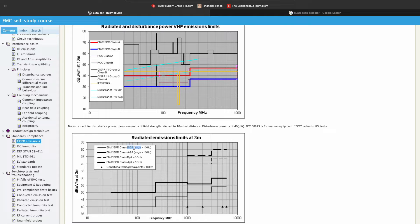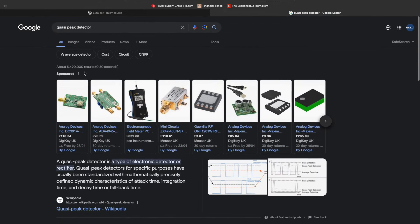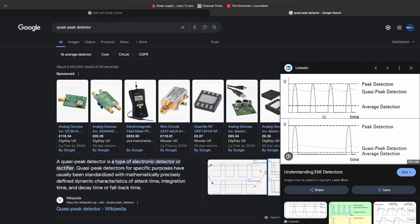For example, this is the Google search results of quasi-peak detector, and you can see that basically it has a special filter, and it can have a very fast charging time and very slow discharging time. So it has a fast charging and very slow discharging, therefore the results will be different.